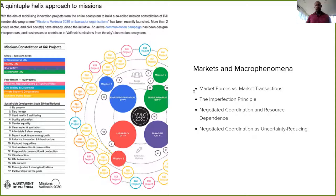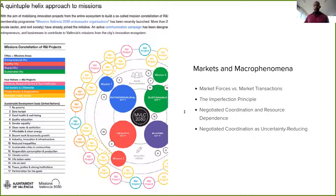In a passage recalling Eleanor Ostrom's appraisal of the standard view, Devine continues that the two standard models of how coordination of production can be achieved are administrative command planning and the invisible hand or market forces. In command planning, the center in principle works everything out in advance and issues instructions to each enterprise. In a market economy, each enterprise decides separately what to produce; relatively profitable industries attract enterprises, and relatively unprofitable ones lose them. Coordination takes place ex ante in command planning and ex post in a market economy.